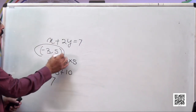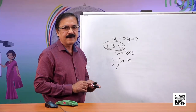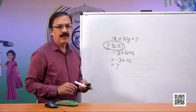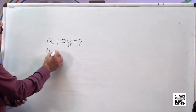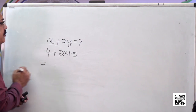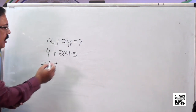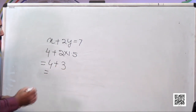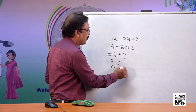This confirms that (-3, 5) is a solution to this equation. Now for the point (4, 1.5): x is 4 plus 2 into 1.5, which gives 4 plus 3, that is 7. So (4, 1.5) is also a solution.